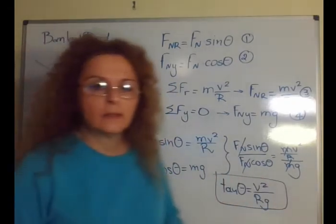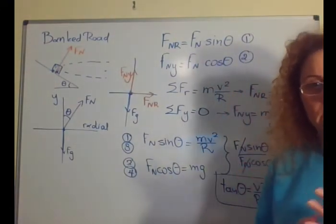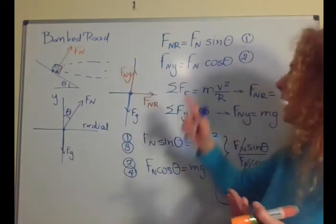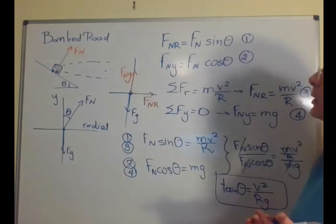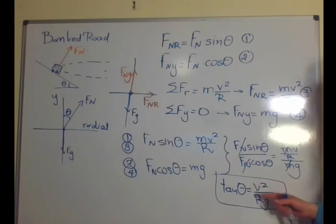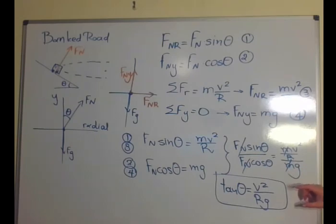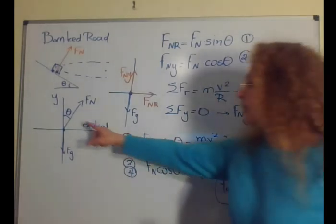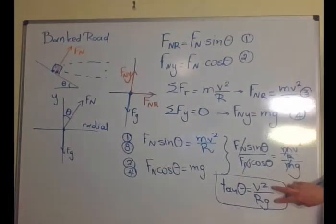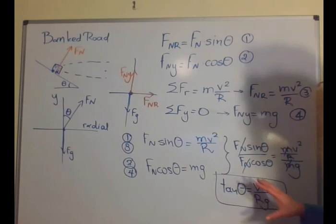We see that in all these problems, in conical pendulum, leaning, and banked road, the formula we come up with is pretty much the same. It depends on the angle. If we have the angle with the horizontal or the vertical, if we have the angle with the horizontal, this is actually flipped. That's the only difference. The formula is always the same.